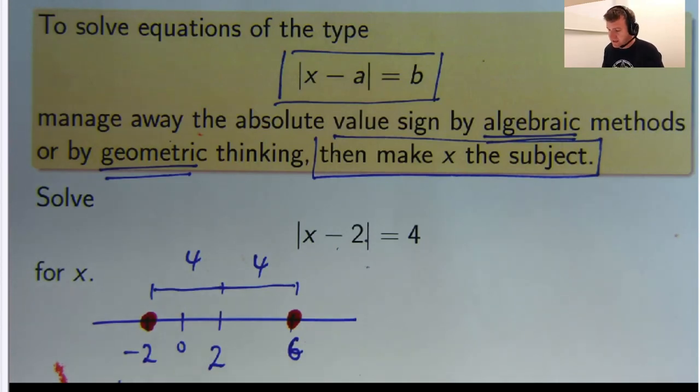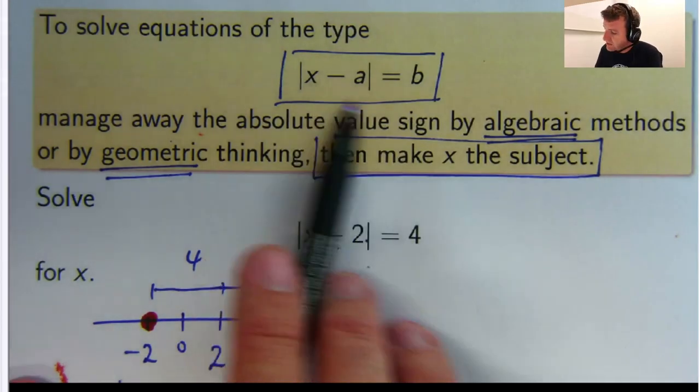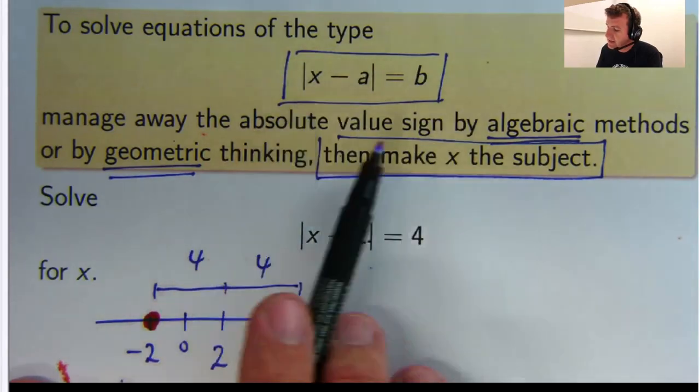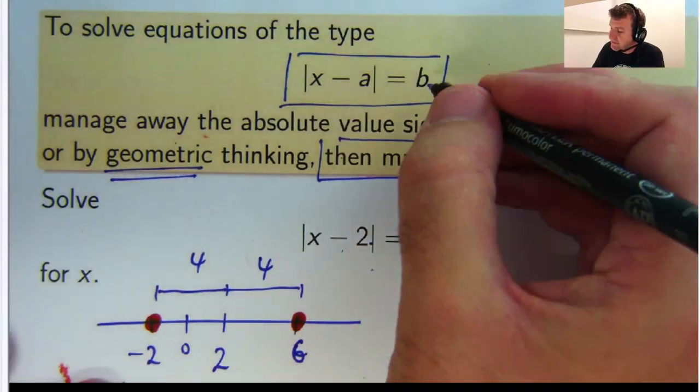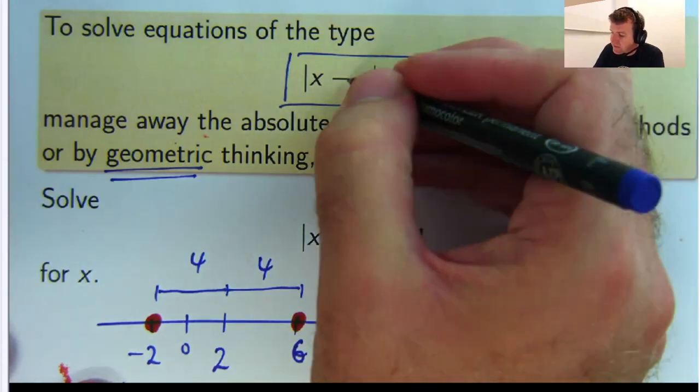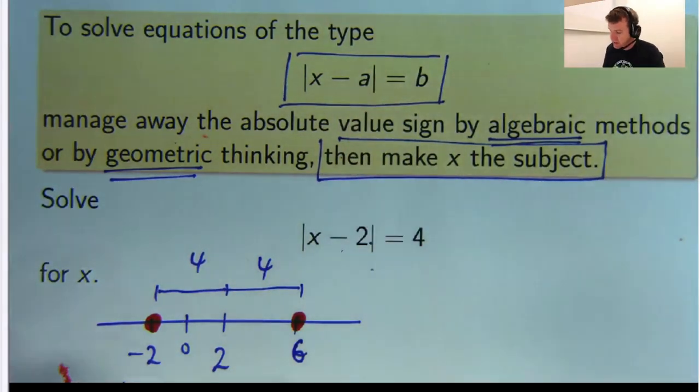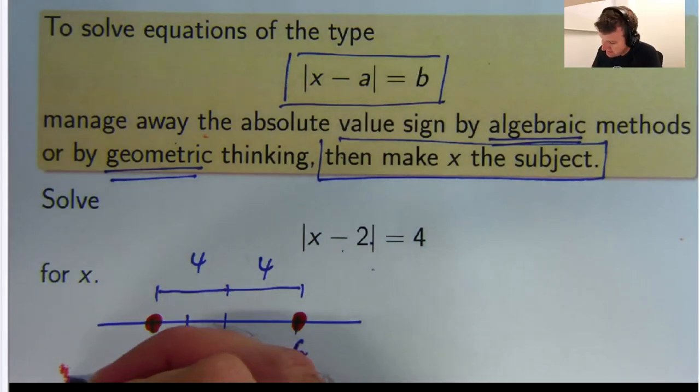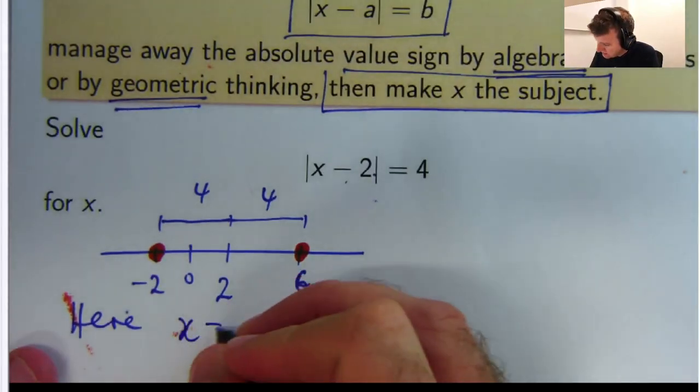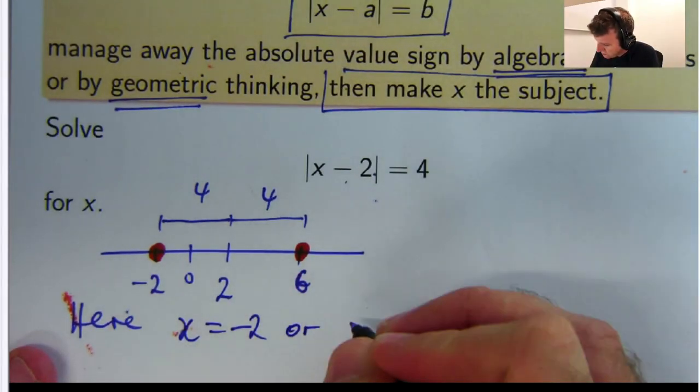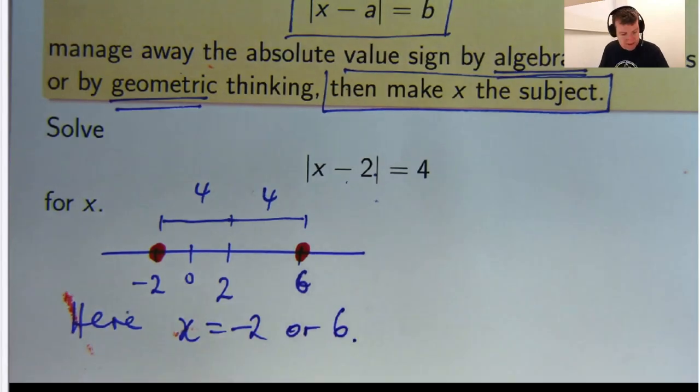So that was pretty easy, right? So up here, what this equation is telling you is, if you want to solve it, find all the x points that are exactly b units away from some point a. So in this case, b was 4 and a was 2. So x equals negative 2 or 6.